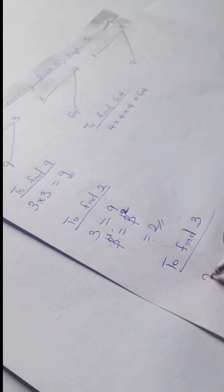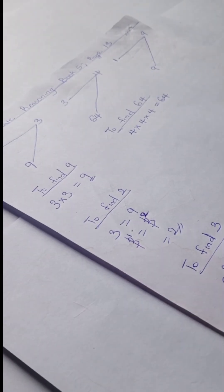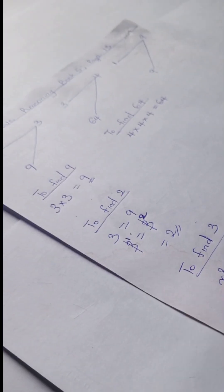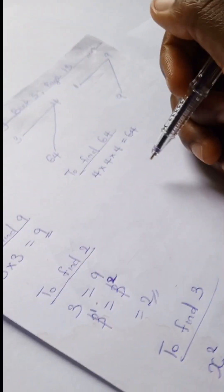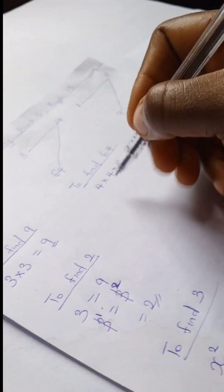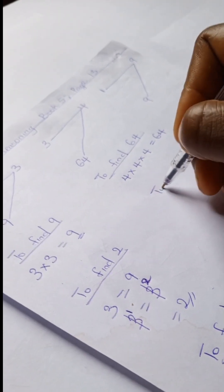Now to find the missing value (3) in the second part: we have x to the power of 2 equals 9. We convert 9 to index form: 3 to the power of 2, because 3 into two places gives us 9. We cancel out the equivalent powers, so x equals 3.